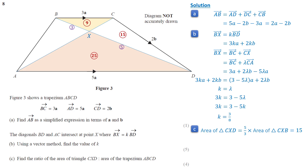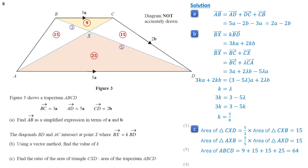By similar reasoning, the area of triangle AXB is also 15 square units. The total area of trapezium is 64 square units. The ratio of the area of triangle CXD to the area of the trapezium ABCD is 15 to 64.